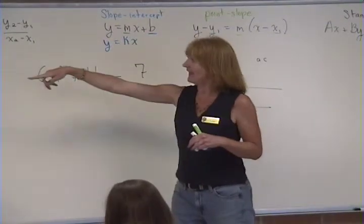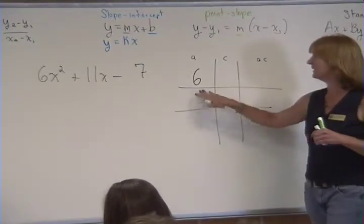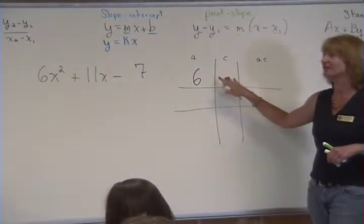A is for any, or the A meaning anything except 1. 1x squared, you start with the x and the x. Alright, what's C in this case? Negative 7.